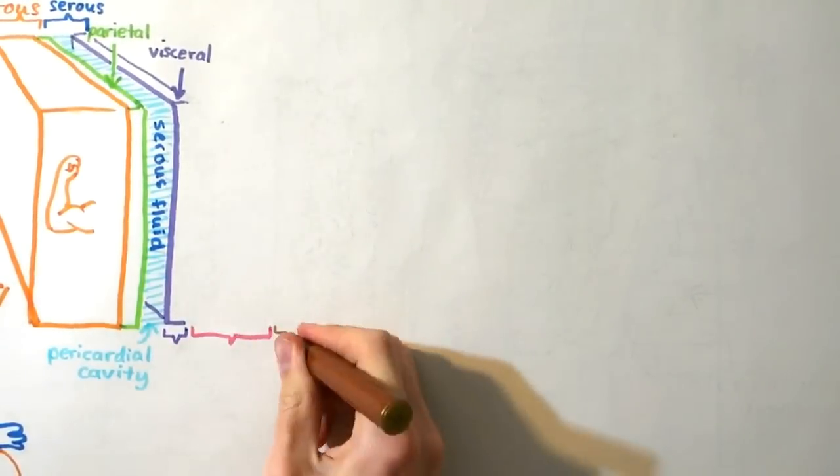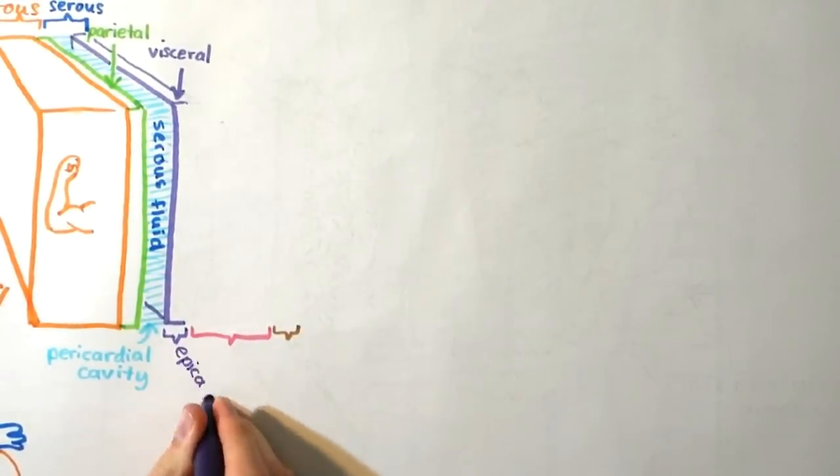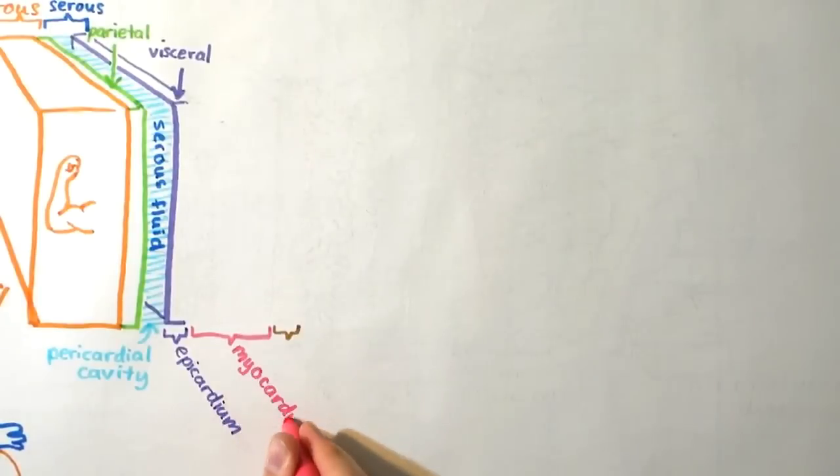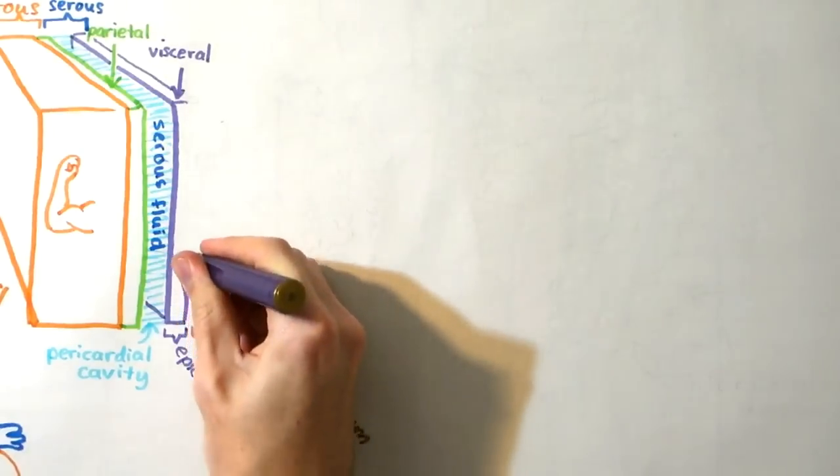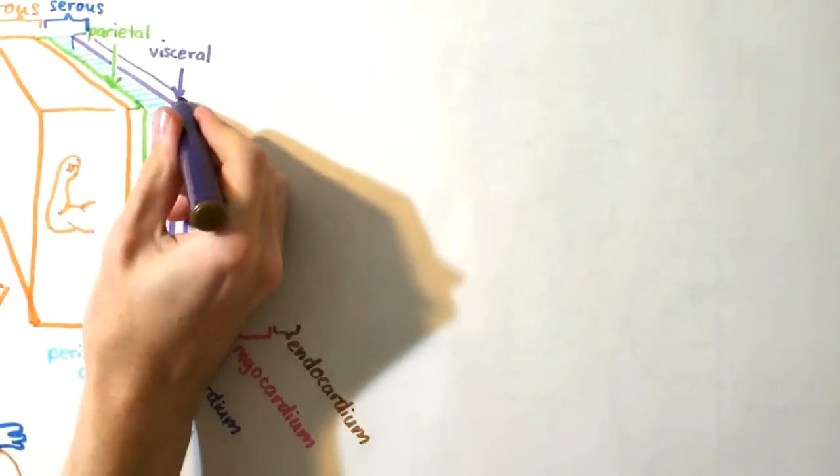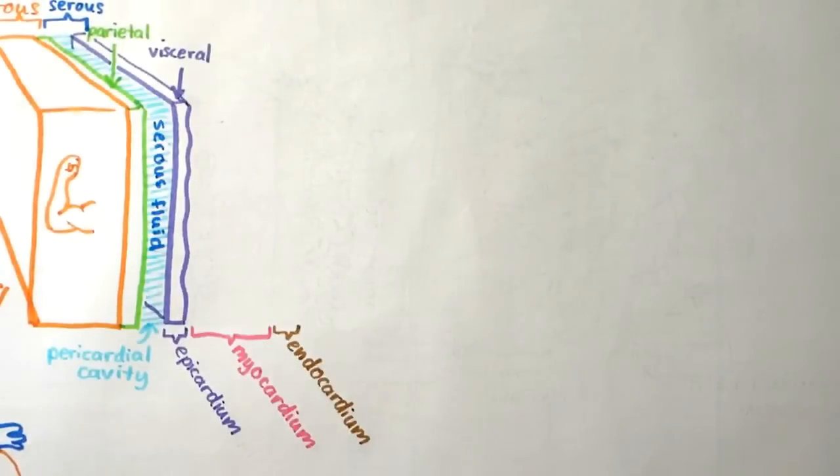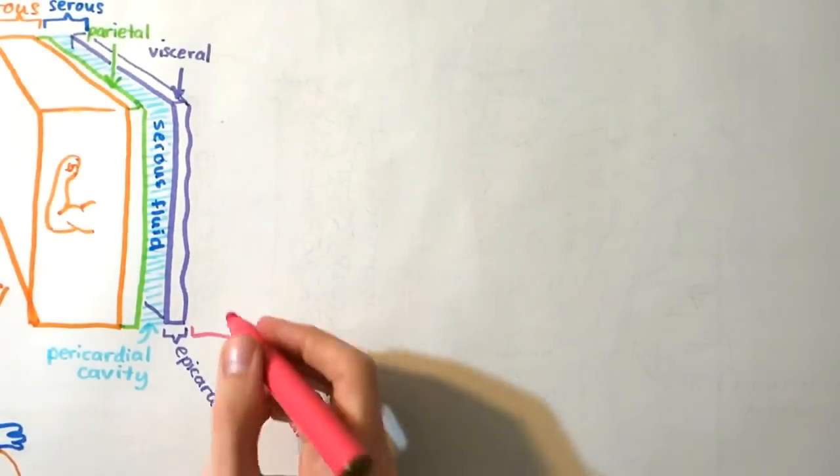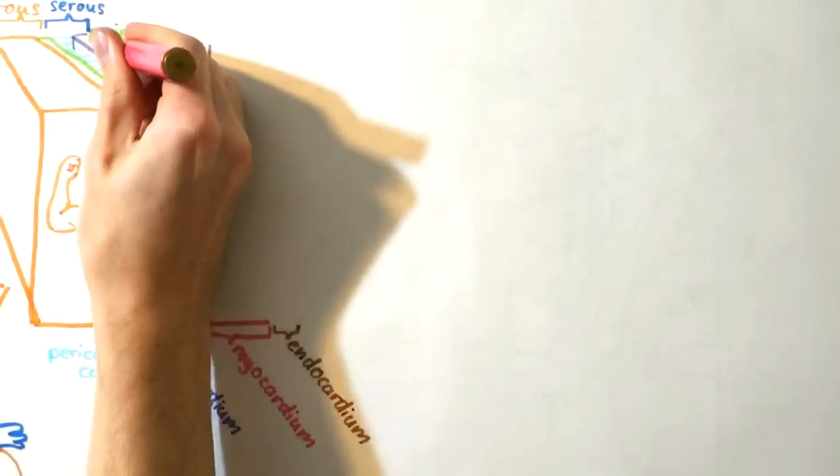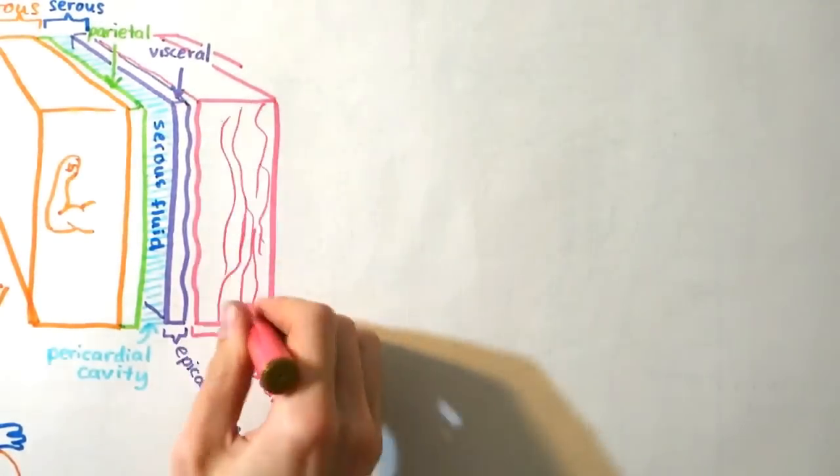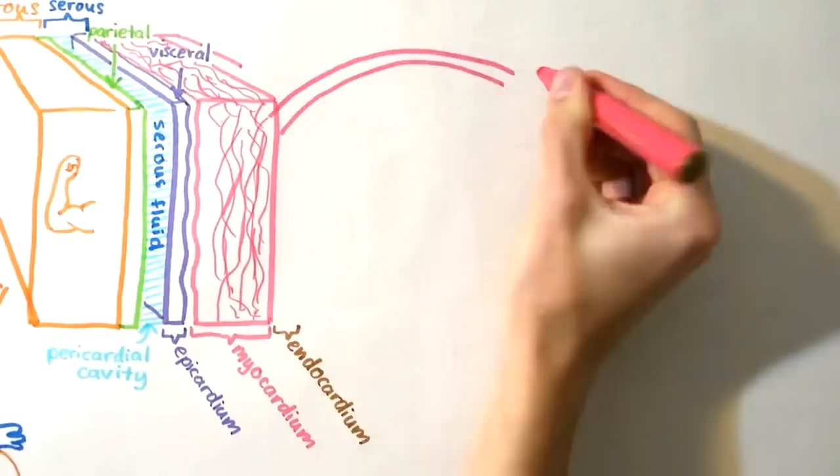The heart wall consists of three distinct layers of tissue: epicardium, myocardium, and endocardium. The epicardium is the thin outermost layer of connective tissue and fat cells located just under the pericardium. The epicardium provides a layer of protection to the heart. The myocardium is the thickest layer and is composed of cardiac muscle cells. Cardiac muscle cells are unique to other types of muscle because they are electrical conductors. This helps coordinate the contraction of the heart.